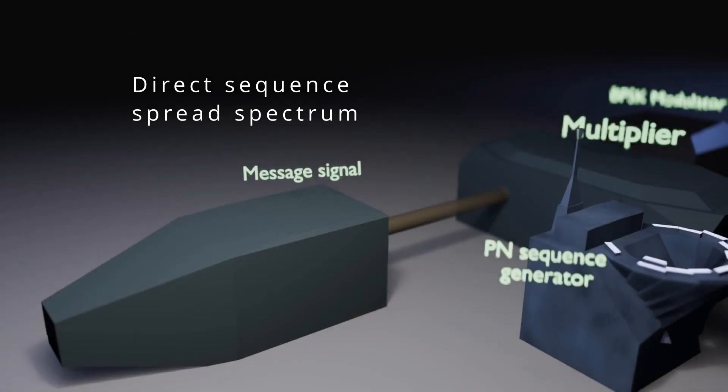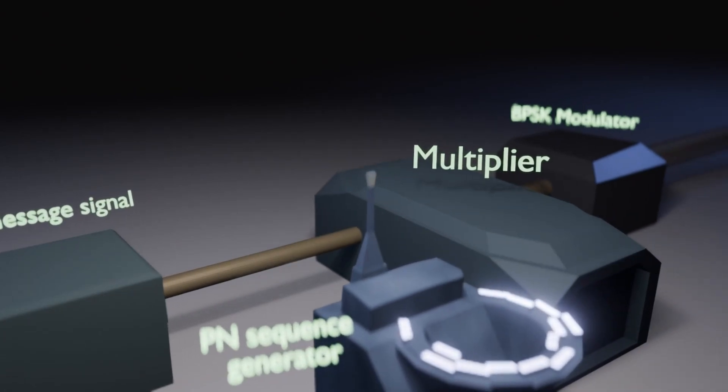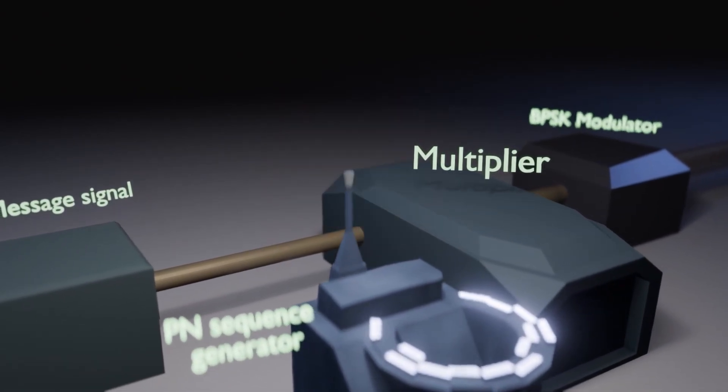Direct Sequence Spread Spectrum. Here, the message signal is multiplied with a PN sequence.